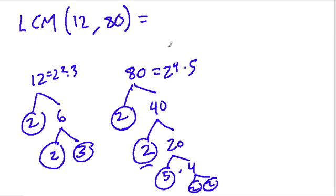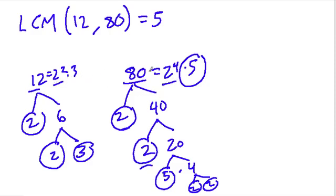So what does the least common multiple equal? Our first type of factor is 5, and the most that occurs in either number is once, so we take a 5. The second type of factor is 2 — it's in both numbers, but the most that occurs is 4 times in 80. And 3 is our last type of factor, occurring only once.